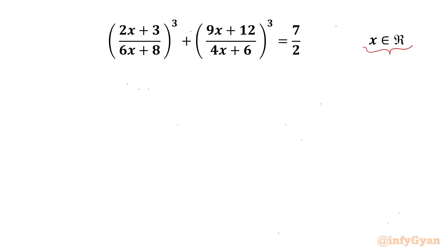Let us get started by writing that our denominators cannot be 0. So x cannot be negative 8/6, which is negative 4/3, and x cannot be negative 6/4, which is negative 3/2.